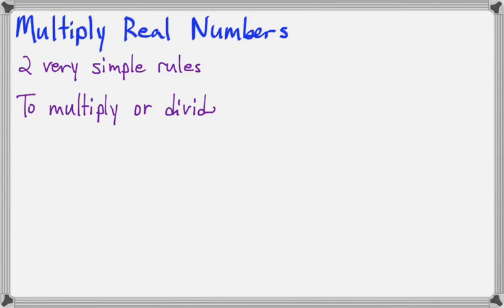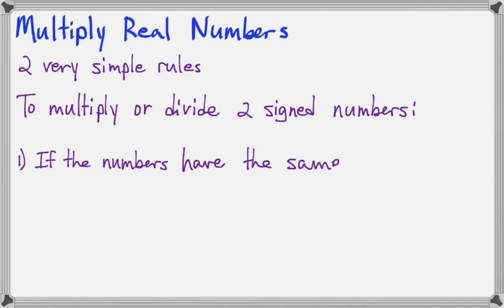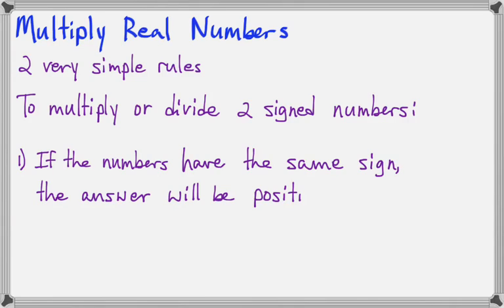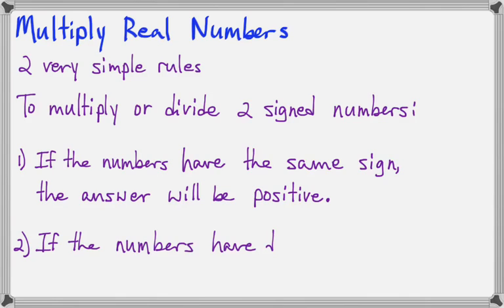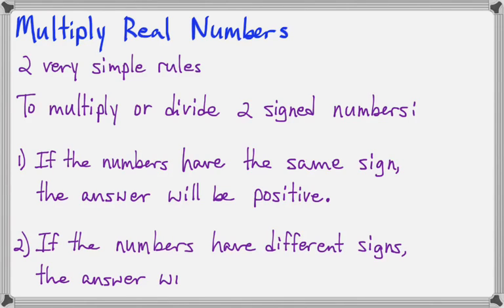To multiply or divide two signed numbers: if the signs are the same, then the answer will be positive. If the two numbers have different signs, the answer will be negative. Those are the rules, and now we're just going to get some practice.